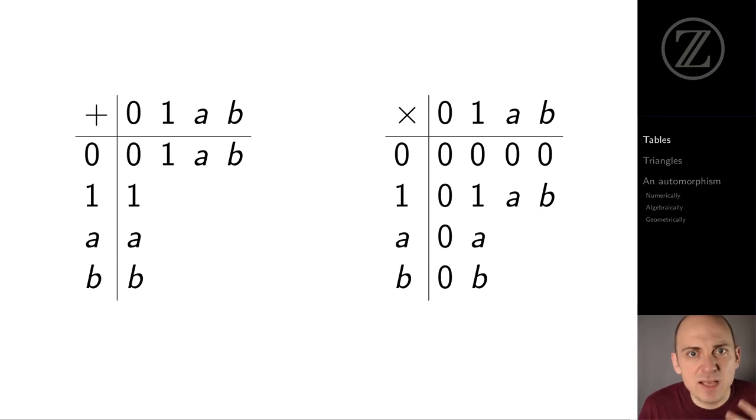Now it's something like playing Sudoku at this point. Each row and each column of the addition table must include the elements 0, 1, A, and B in some order. Each non-zero row and column of the multiplication table includes 1, A, and B in some order.